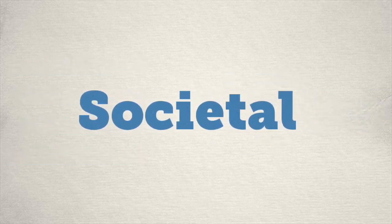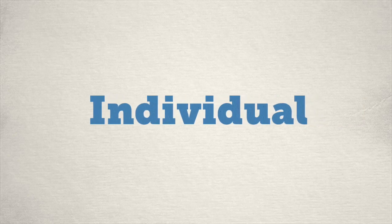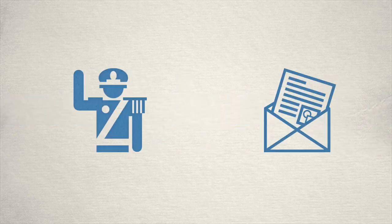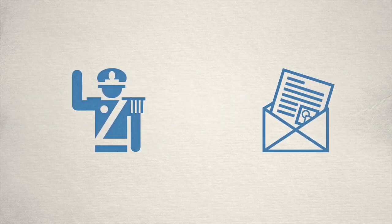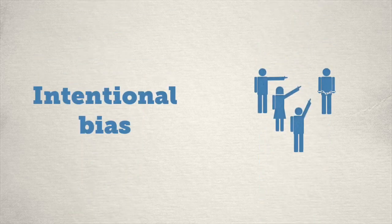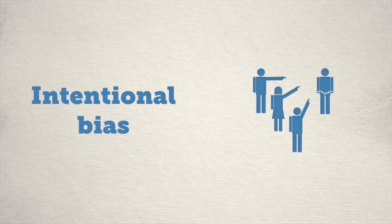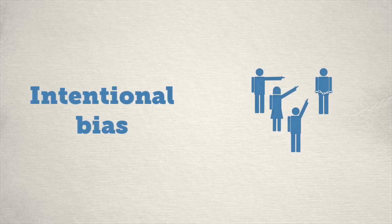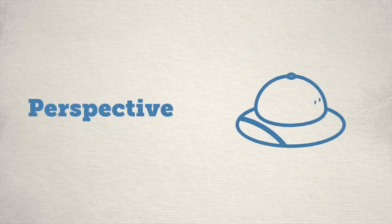This is looking at the perspective of the source from a societal point of view but you can also look at individual perspective. For example, let's say a general loses a battle and sends a report back to his superiors. There's obviously going to be some intentional bias here. He might downplay his mistakes and exaggerate the strength of the enemy.